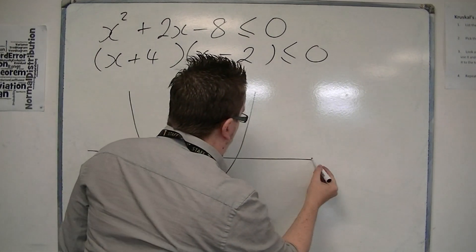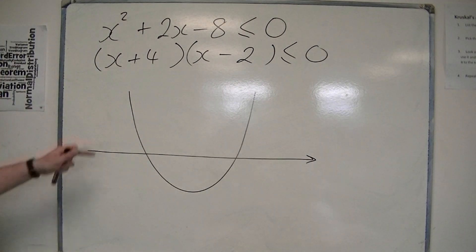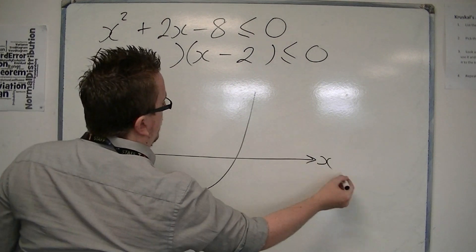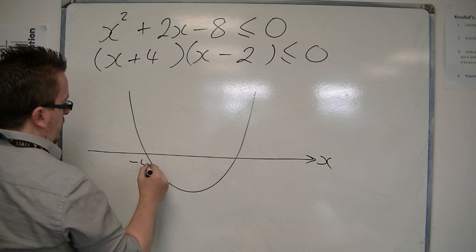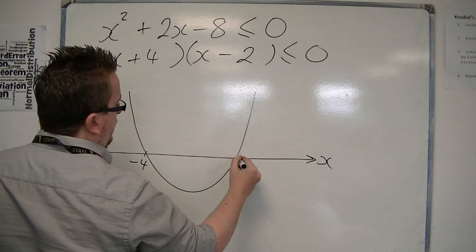There are two solutions. So it is a parabola that goes through the x-axis, and it goes through at minus 4 and plus 2.